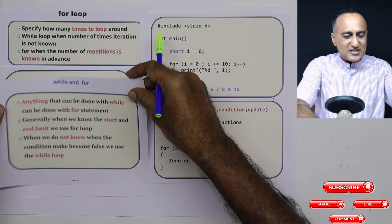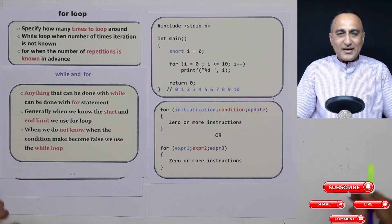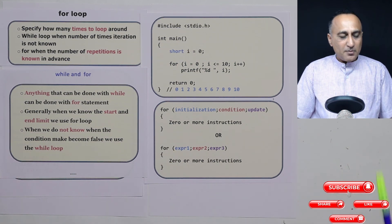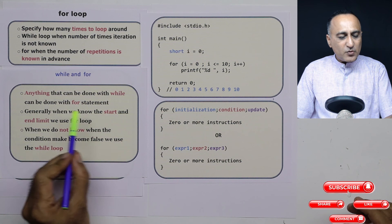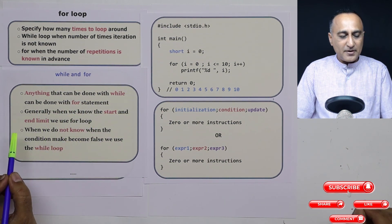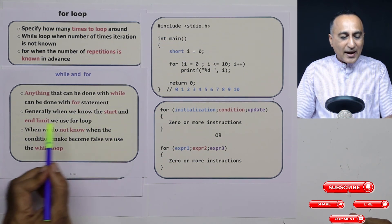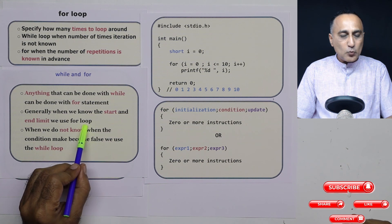Now, just in case you're wondering, what is the difference between the while and the for loop? There is really not much because anything that can be done with the while loop can one hundred percent be done with the for loop or the for statement.